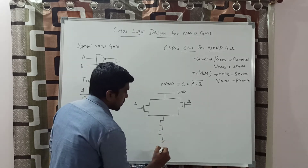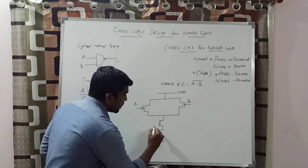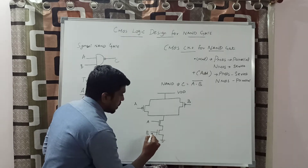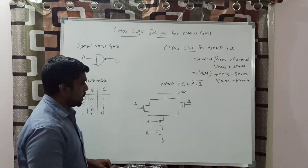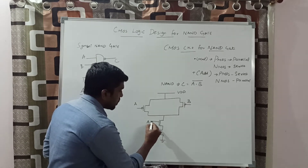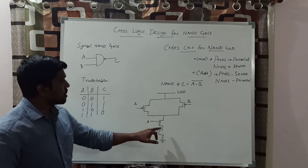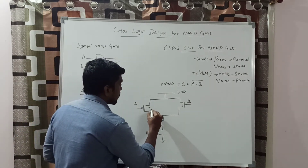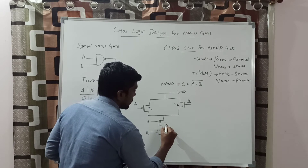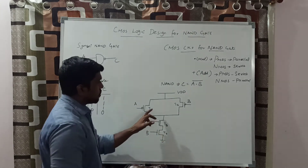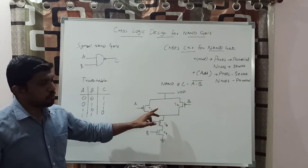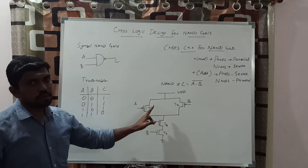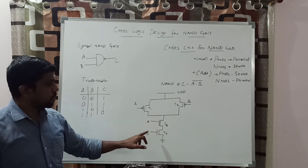Then connect two NMOS transistors in series. The inputs to the NMOS transistors are A and B; A and B are also inputs to the PMOS transistors. In total we are using 4 transistors: 2 for PMOS and 2 for NMOS. T1 and T2 are PMOS transistors; T3 and T4 are NMOS transistors.